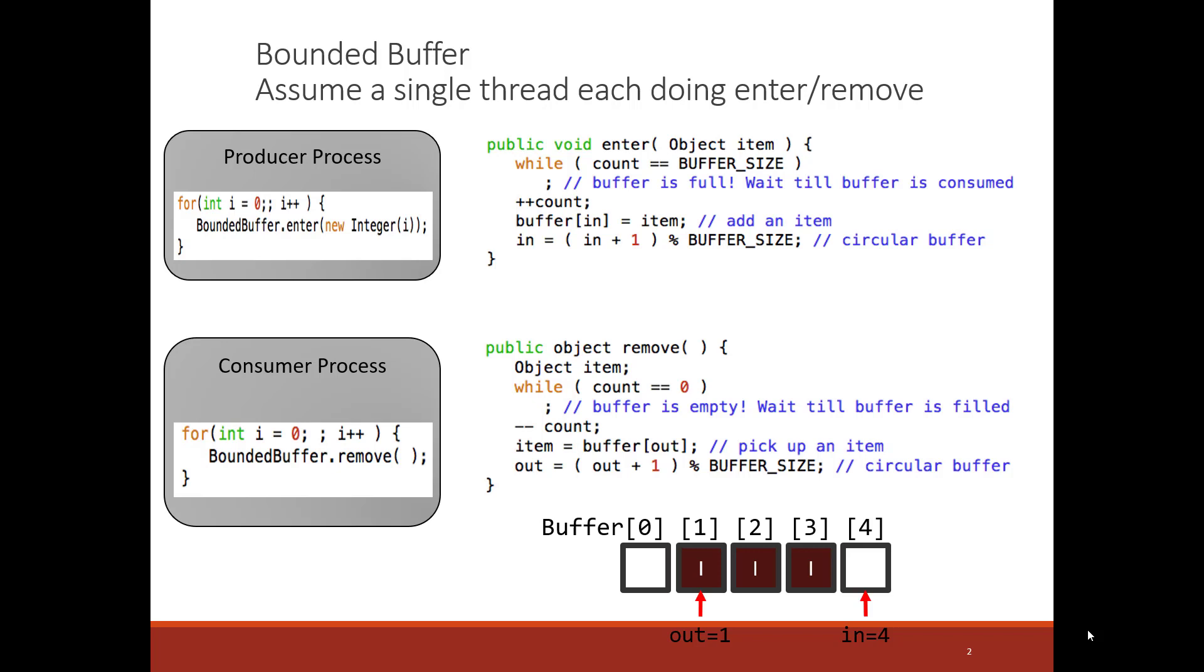Great. I assume that you've understood the code in detail. Now let's talk about two threads executing in this code at the same time. Let's say one thread is in the enter method, while another thread is in the remove method. One thread is a producer and putting things in, and another thread is a consumer and removing things. How can they get in each other's way?